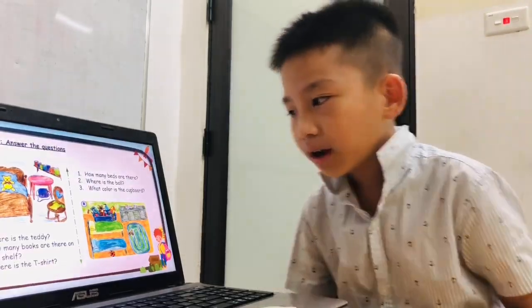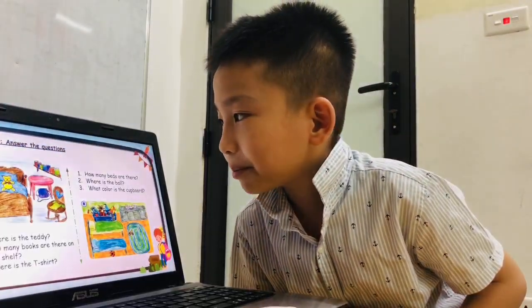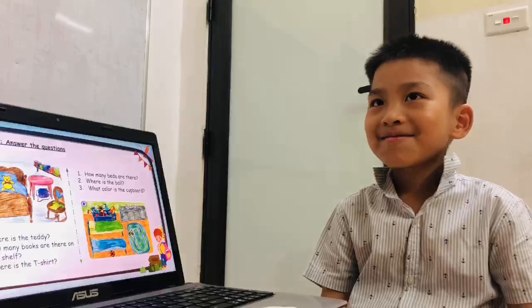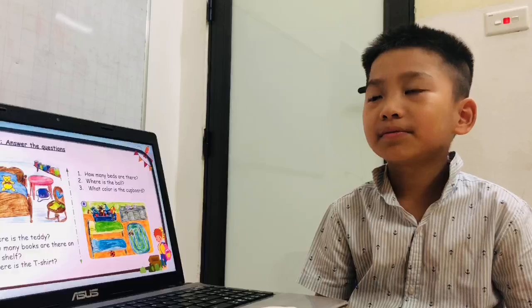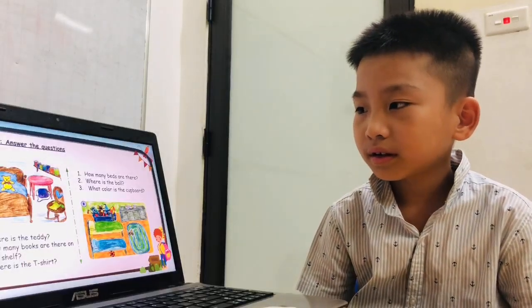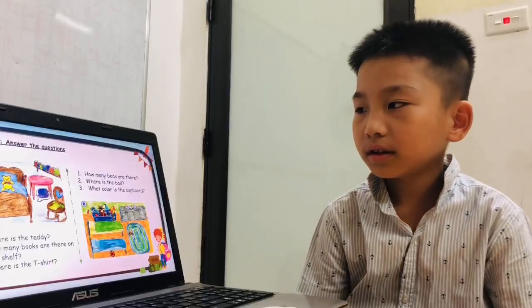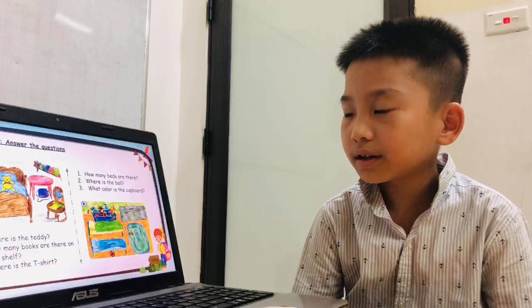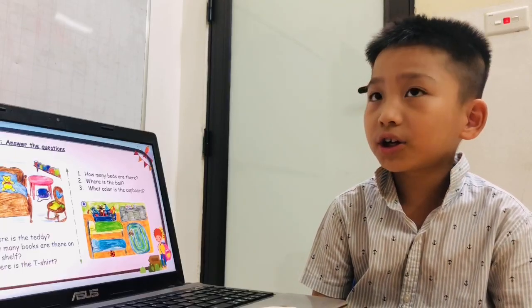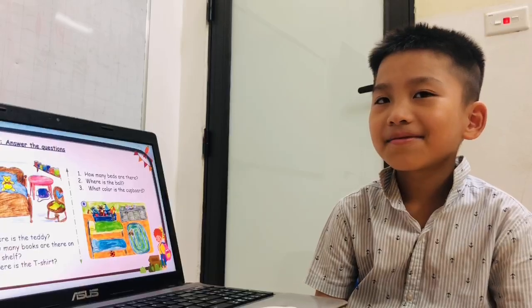How many books are there on the shelf? How many books? Seven books. Seven books. Yes, there are seven books on the shelf, right? All right. Where is the t-shirt? On the chair. It's on the chair.